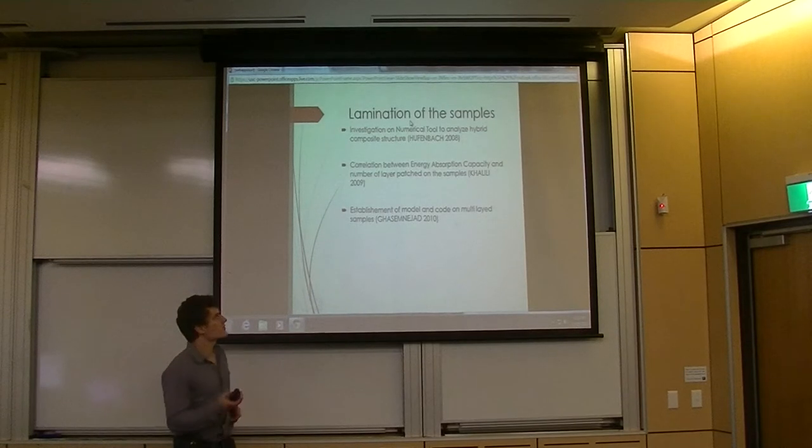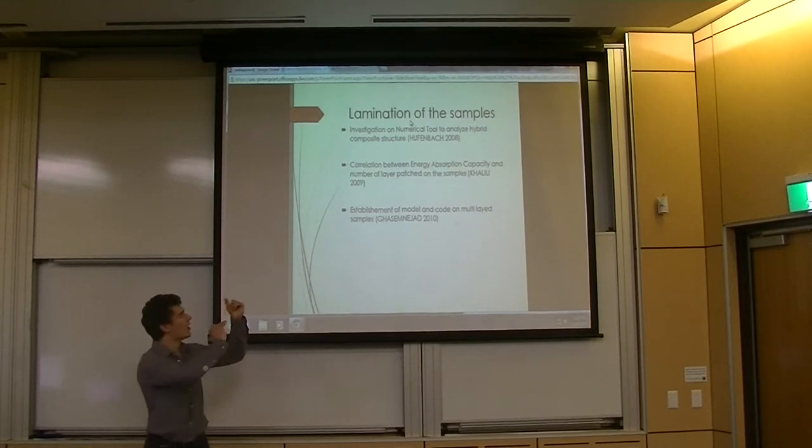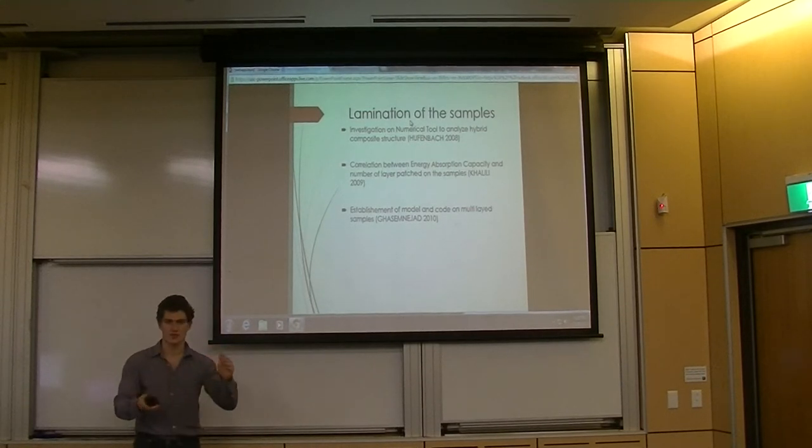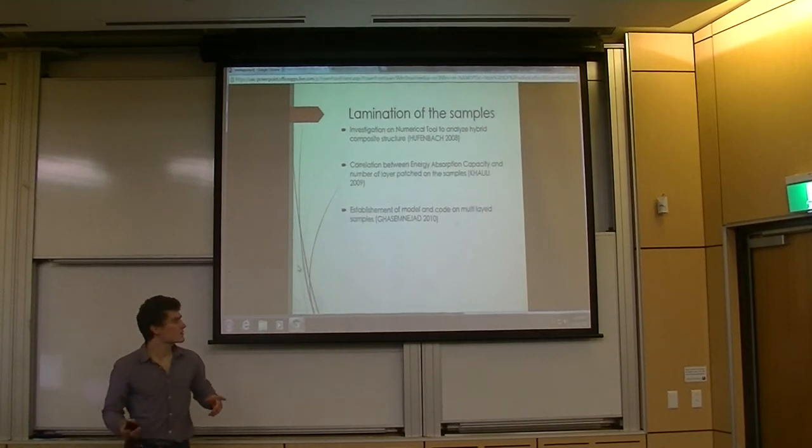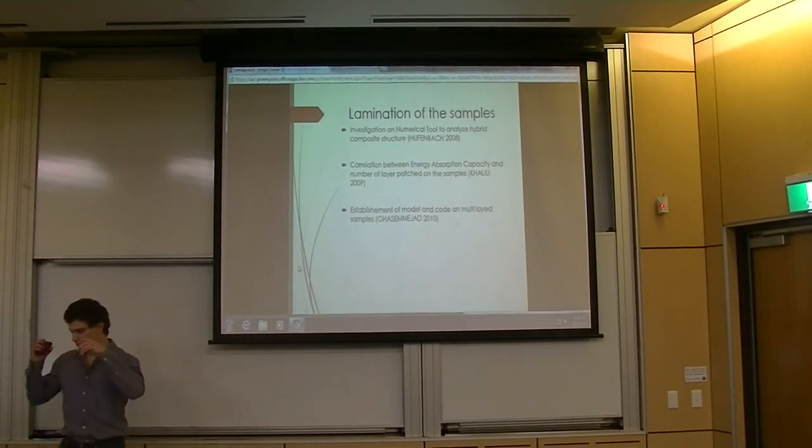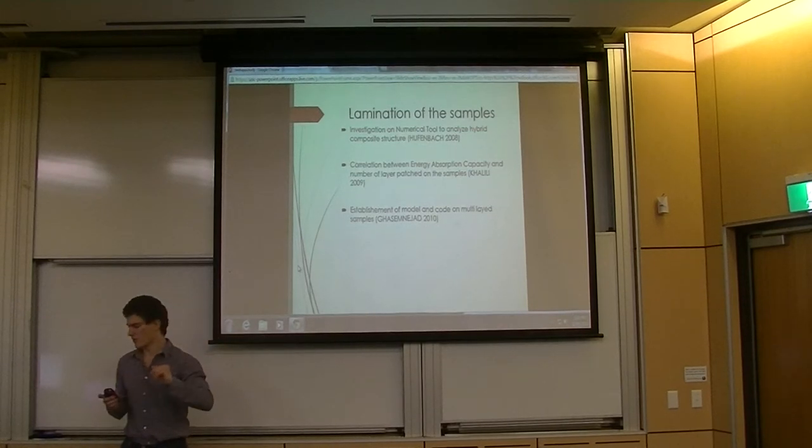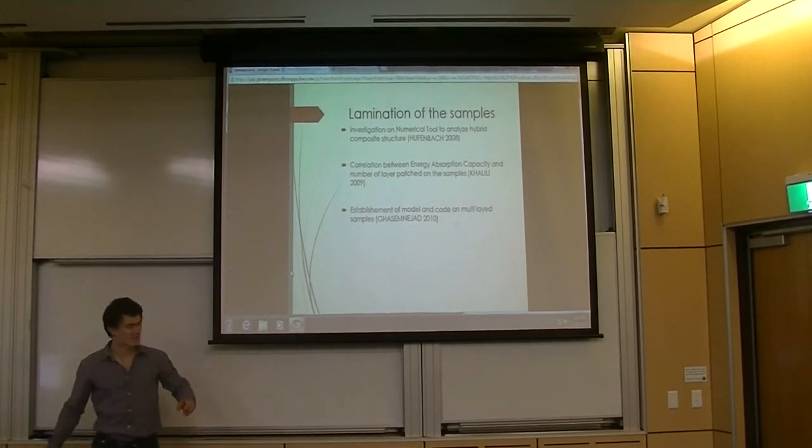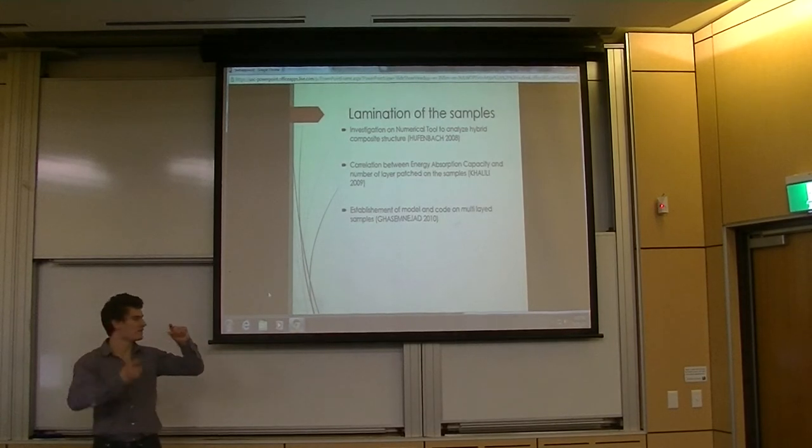So let's talk about the lamination of the samples. In 2008, there's been an investigation about a numerical tool that actually can analyze a hybrid composite structure. Later in 2009, there has been a correlation between the energy absorption capacity and the number of layers patched on a sample. And only in 2010, there has been an establishment of a model and a code that has been included in the software to analyze those kinds of samples, I mean, multi-layered samples.